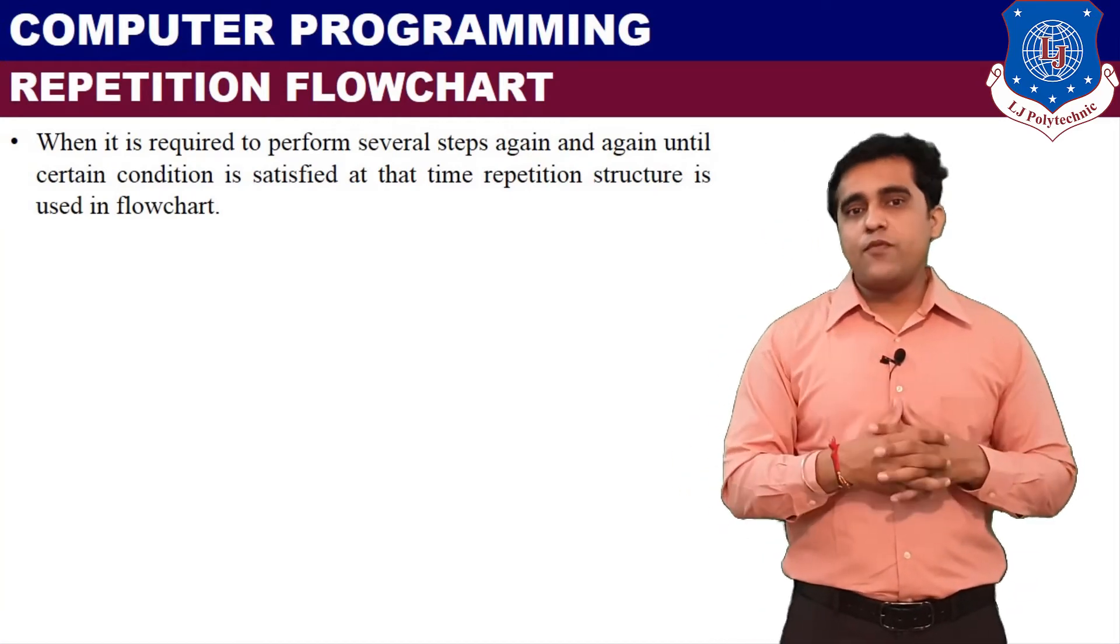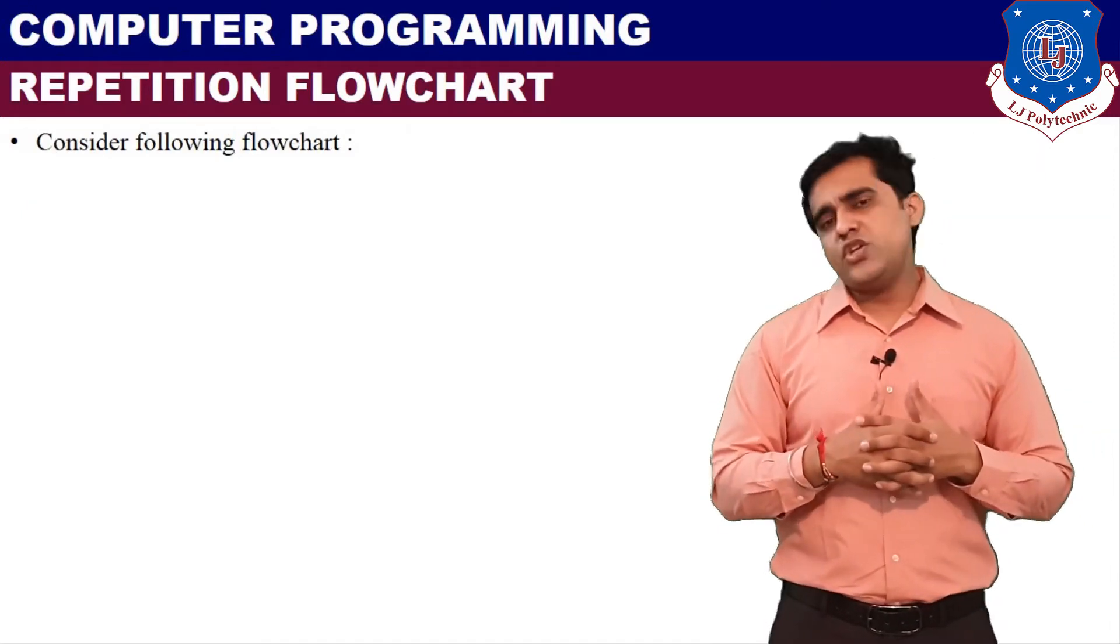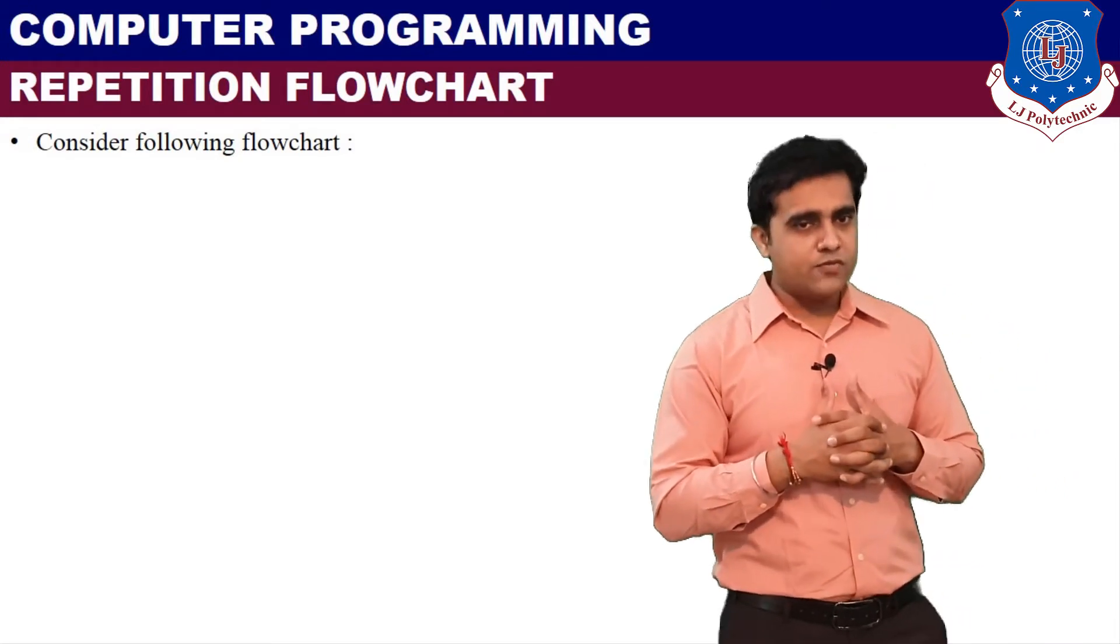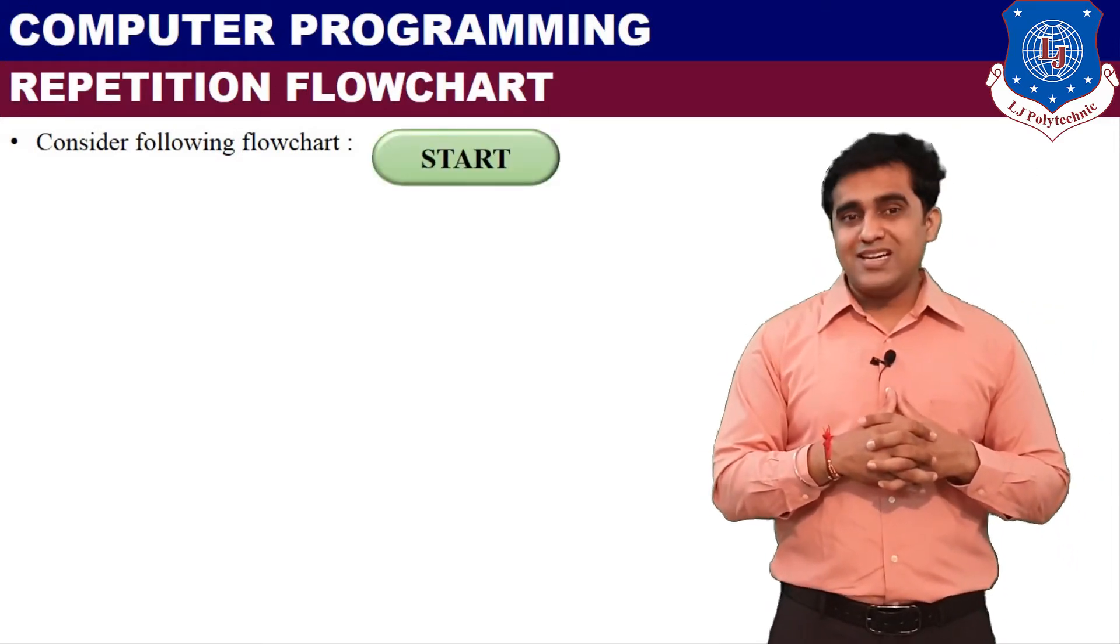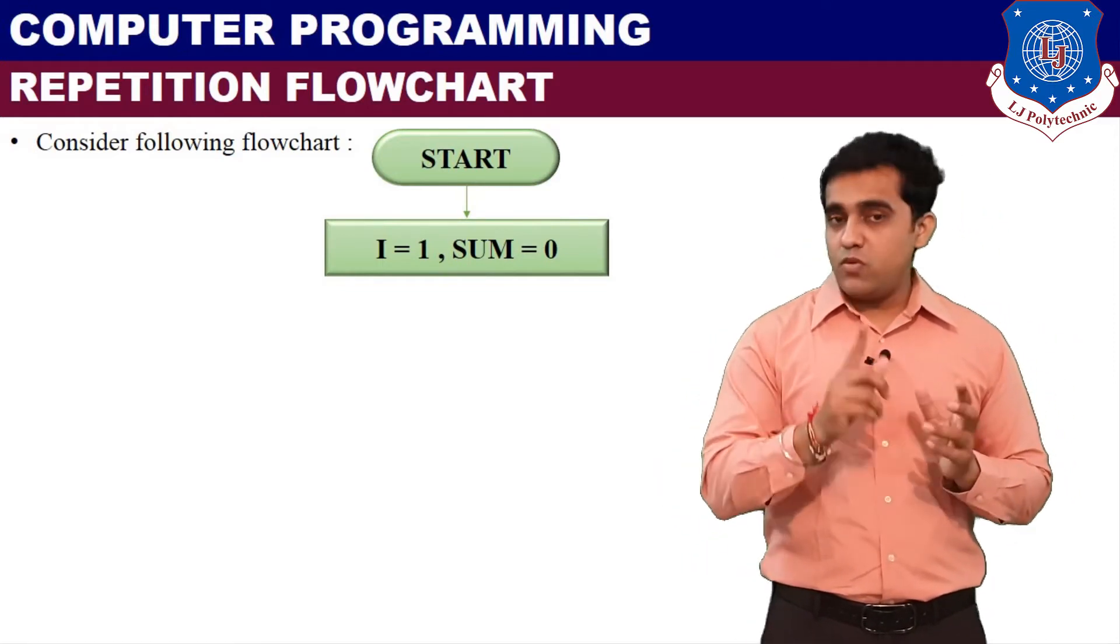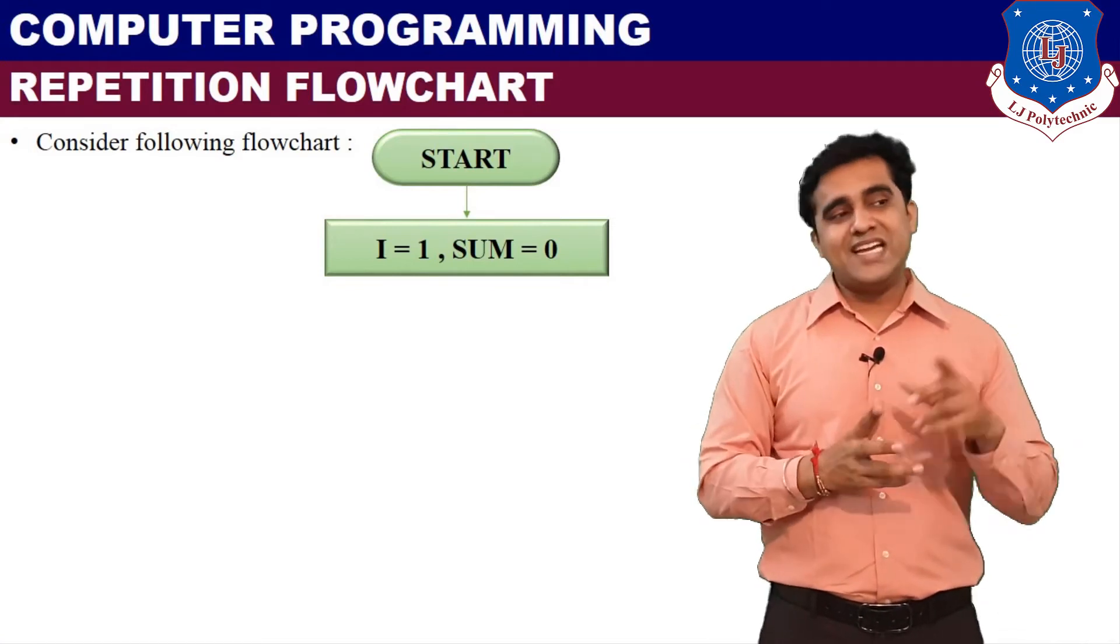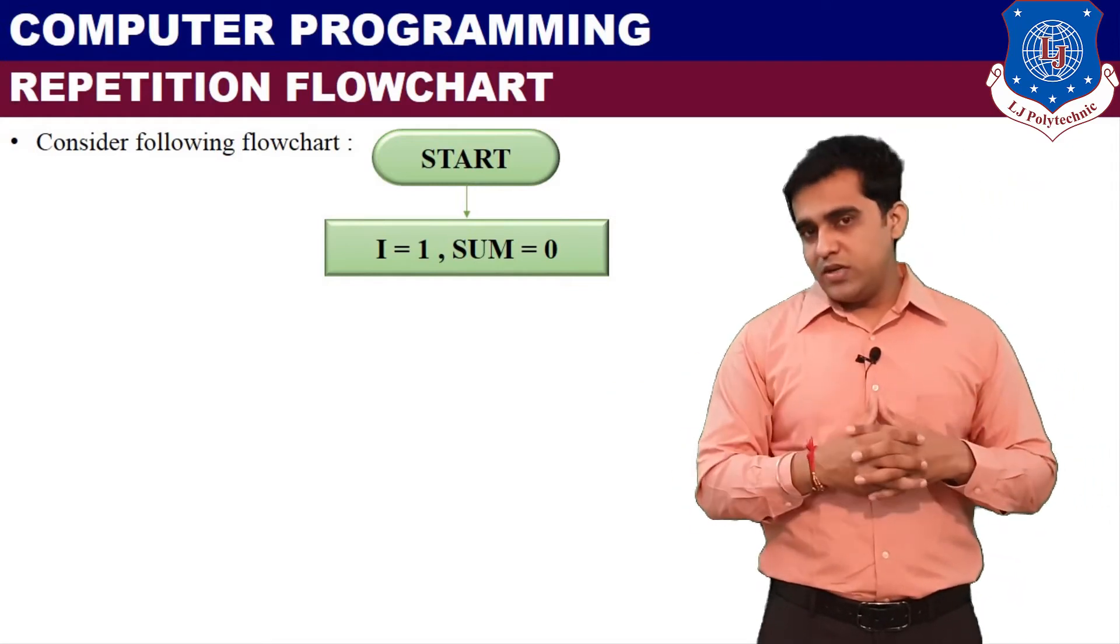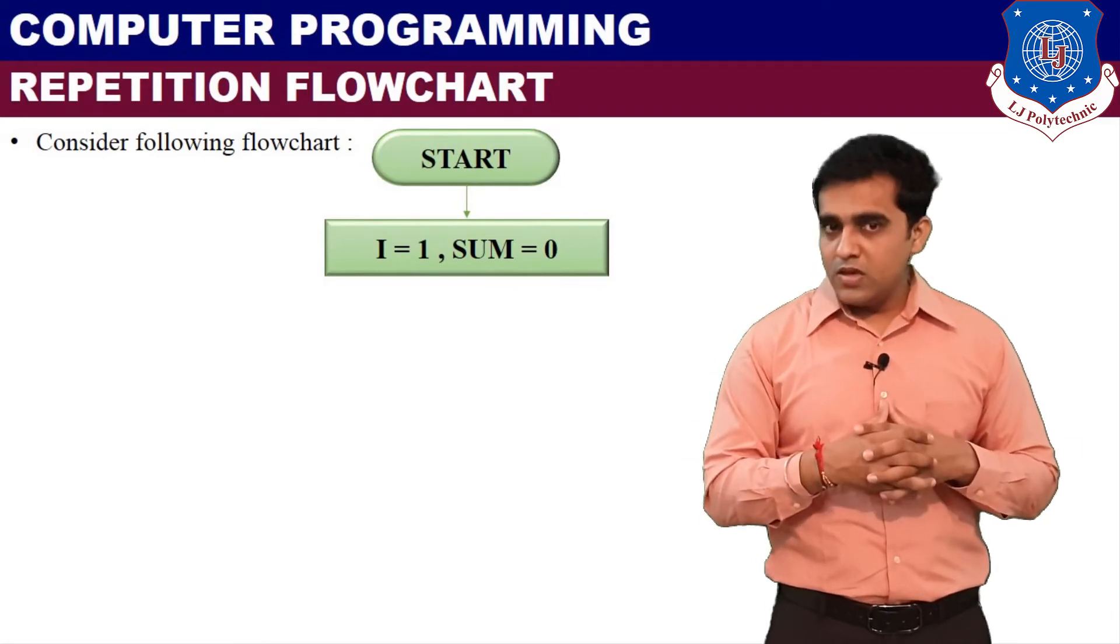For example, we need to find the sum of 1 to 10, so we will draw this flowchart like this: first start, then flowline, then we will take I as our initial variable and the value of initial variable is going to be 1, because we have to find the sum of 1 to 10, so our starting point is 1, our ending point is 10. So I equals to 1, and the sum of these values is going to be stored into the variable called sum, so we are initializing sum equals to 0.